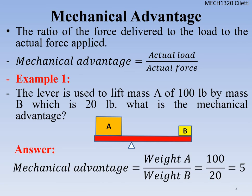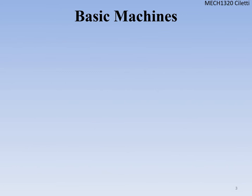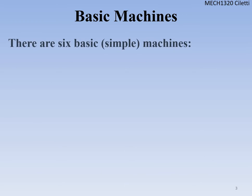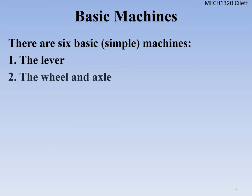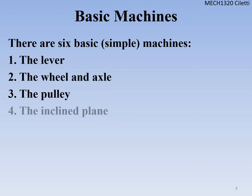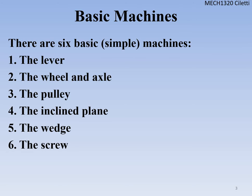We're using a lever-type scenario on a fulcrum. Now let's talk about the six basic machines: the lever, the wheel and axle, the pulley, the inclined plane, the wedge, and the screw — machines we use throughout everyday life, not just in industry.